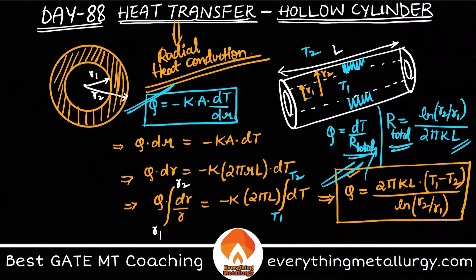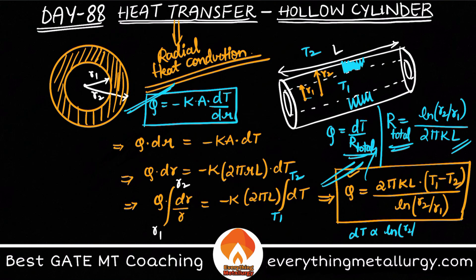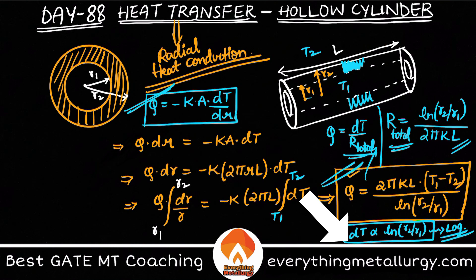There was a question in 2010 asking about temperature variation with respect to thickness. The thickness is r2 minus r1, and from the equation we can see that dT is proportional to ln(r2/r1), meaning the temperature variation is logarithmic in a hollow cylinder.